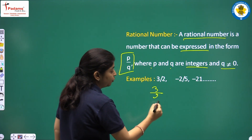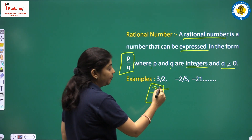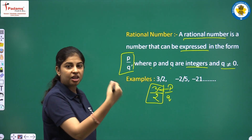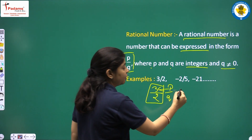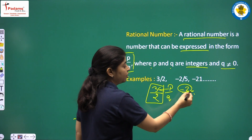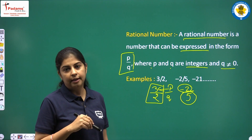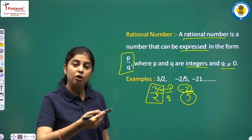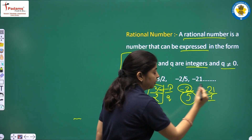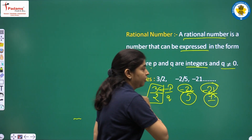Examples of rational numbers: 3/2 — here P is 3 and Q is 2, written in P/Q form. Next, minus 2 upon 5 — P is minus 2 and Q is 5. Next, minus 21 — we can write this as minus 21 upon 1, so P is minus 21 and Q is 1.